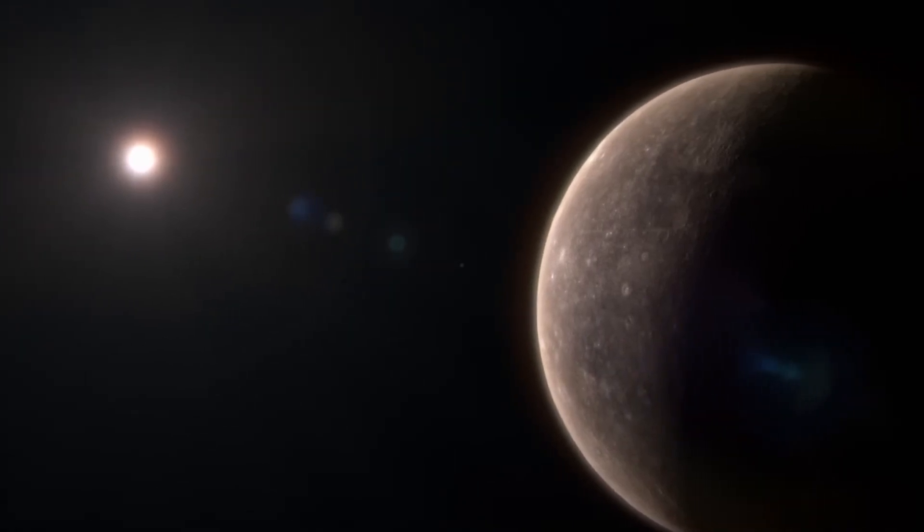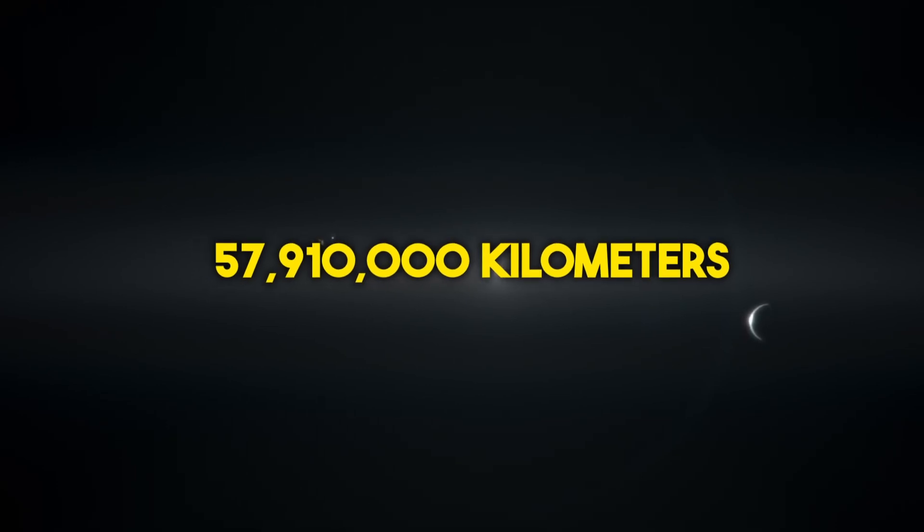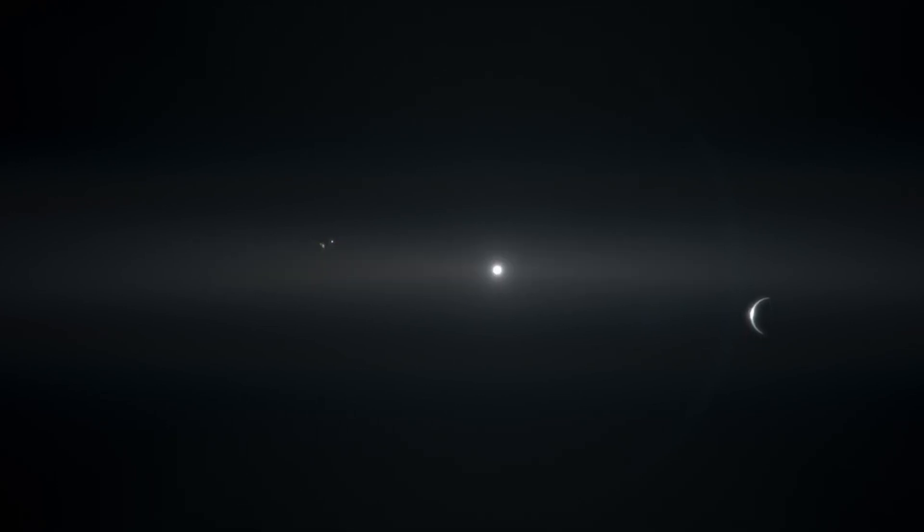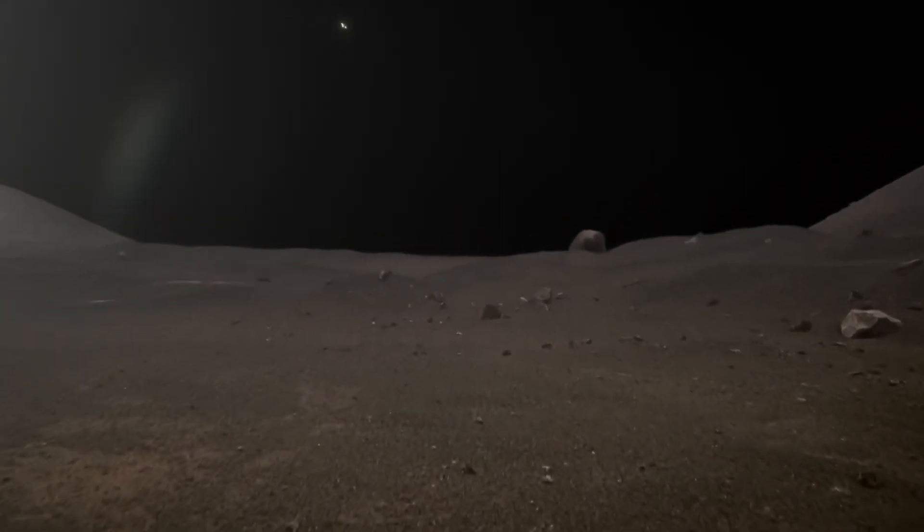Take our trusty neighbor Mercury, for example. It sits snugly closest to the sun at a mean distance of 57,910,000 kilometers. On its day side, temperatures soar to a toasty 430 degrees Celsius.